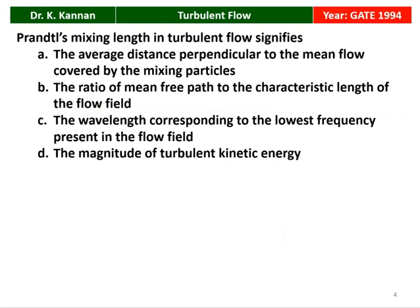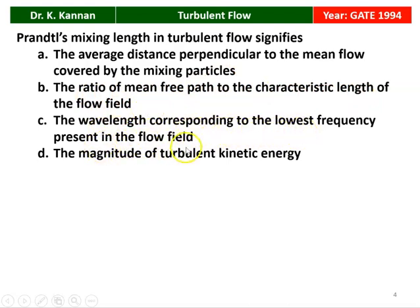The next question is from the 1994 question paper. Prandtl mixing length in turbulent flow signifies: the average distance perpendicular to the mean flow covered by the mixing particle; the ratio of mean free path to the characteristic length of the flow field; the wavelength corresponding to the lowest frequency present in the flow field; or the magnitude of turbulent kinetic energy.